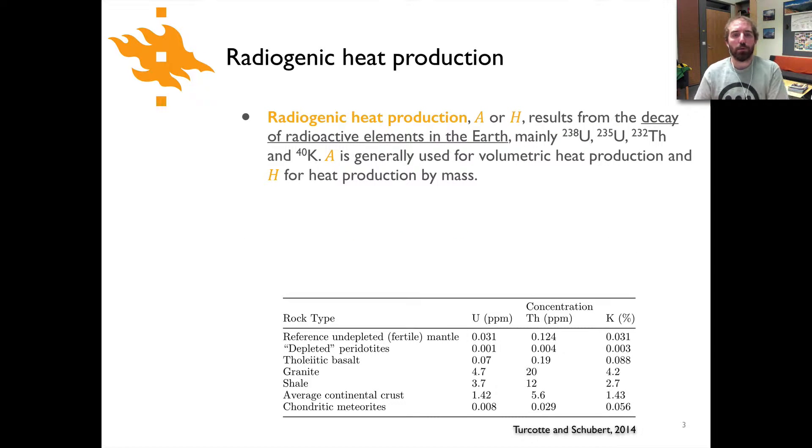Radiogenic heat production itself is typically represented with either a capital A or an H, it depends. And it's something that results from the decay of radioactive elements within the interior of the Earth, specifically uranium-238, uranium-235, thorium-232, and potassium-40. Those are the four main sources of radiogenic heat within the Earth.